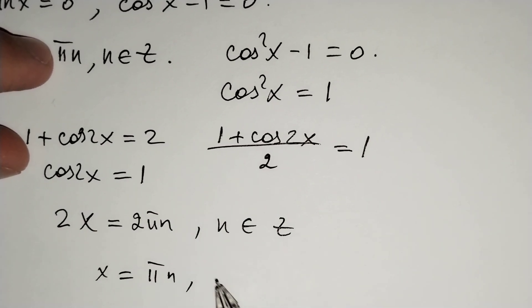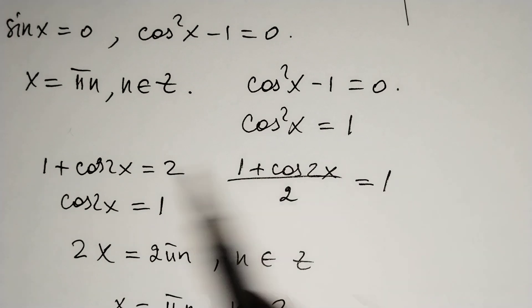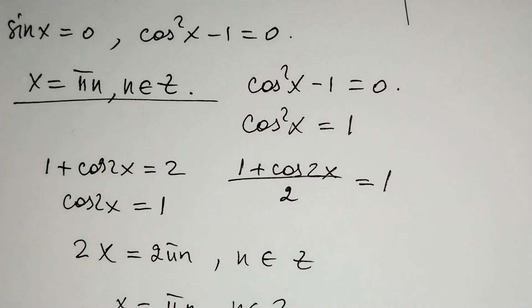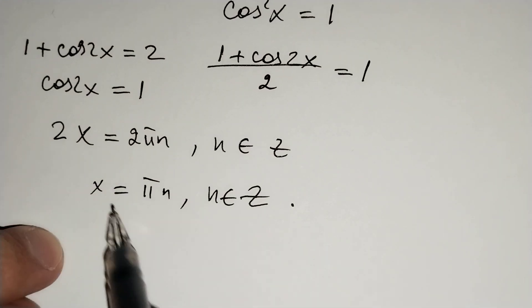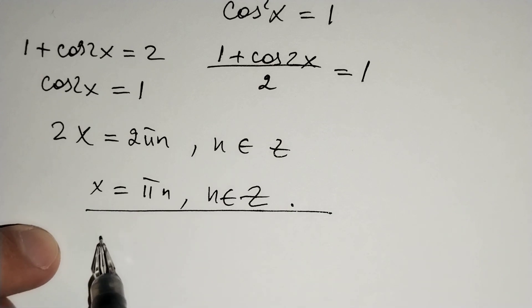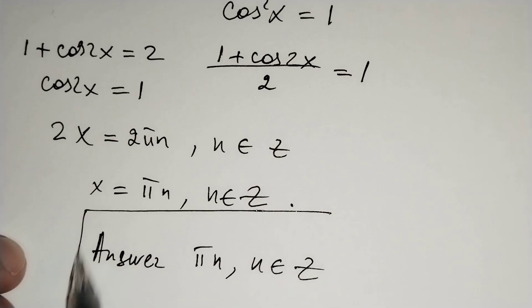So x equals pi n, where n belongs to the integers. We have two solutions and they are the same: x equals pi n from both cases. Our final answer is x equals pi n, where n belongs to the integers.